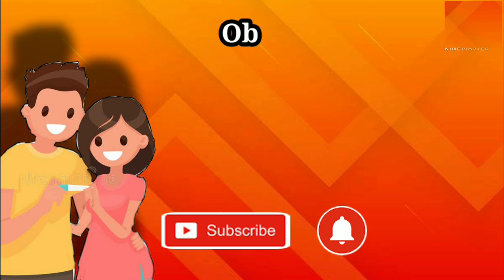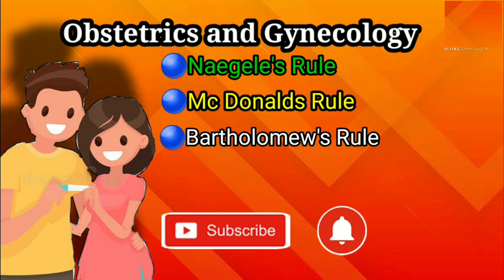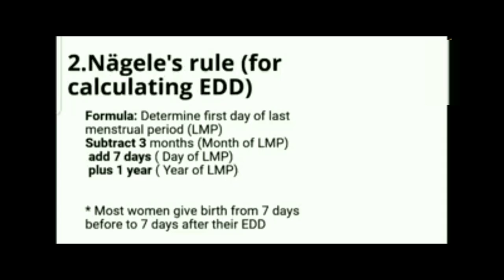Today we'll be discussing obstetrics and gynecology — specifically Nagel's Rule, McDonald's Rule, and other obstetrical computations that appear on your board exam. First, let's talk about Nagel's Rule. This is the rule we use to determine when a woman will give birth, or her estimated due date of pregnancy.